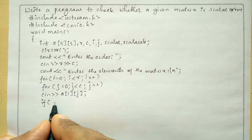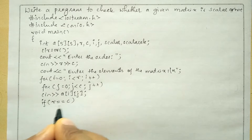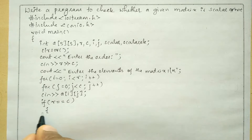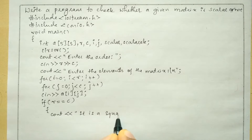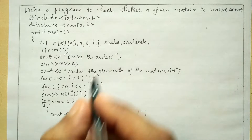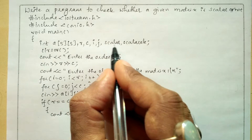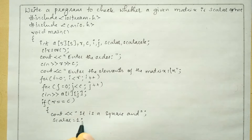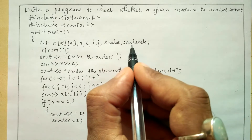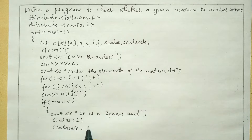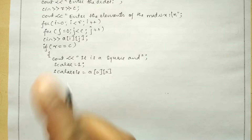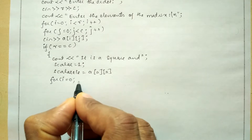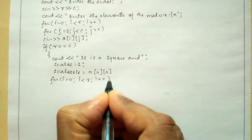After receiving the elements we have to check whether the number of rows equals the number of columns. If row equals column, then it is a square matrix. Inside the if block, we print that it is a square, set scalar equal to 1 to represent true, and then set scalar element equal to a[0][0], which is the first row, first column element.